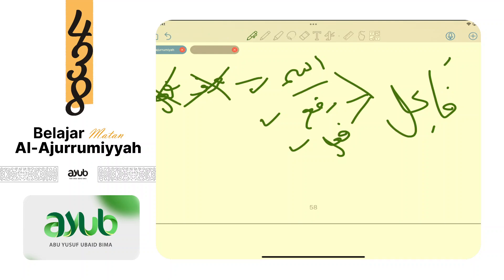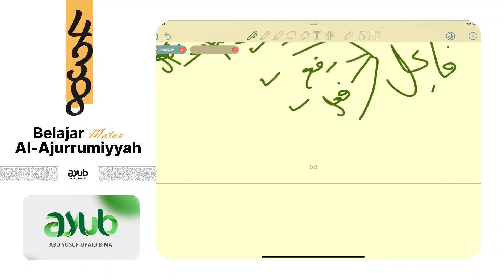Sebenarnya masih ada satu ketentuan yang tidak disebutkan penulis, saya tambahkan yang keempat: fi'ilnya harus fi'il ma'lum. Karena fi'il ada dua: fi'il ma'lum dan fi'il majhul. Kalau antum dapat isim marfu' terletak setelah fi'il ma'lum, langsung katakan fa'il.